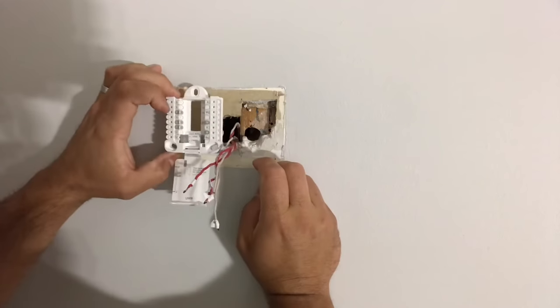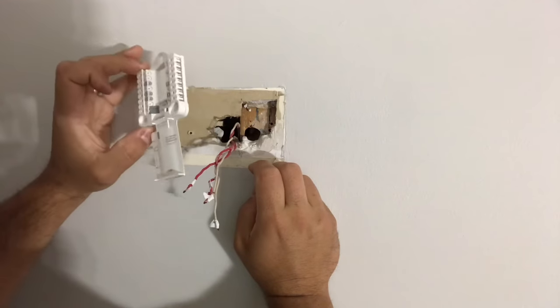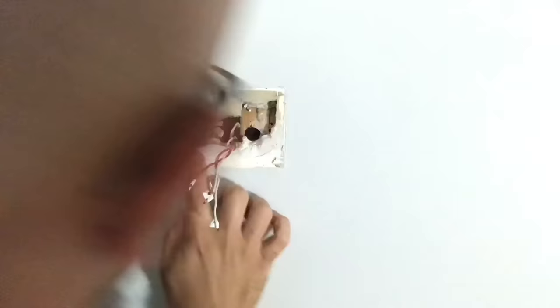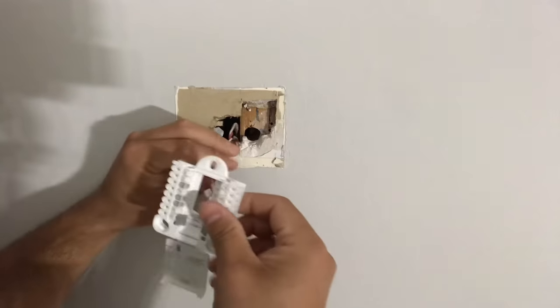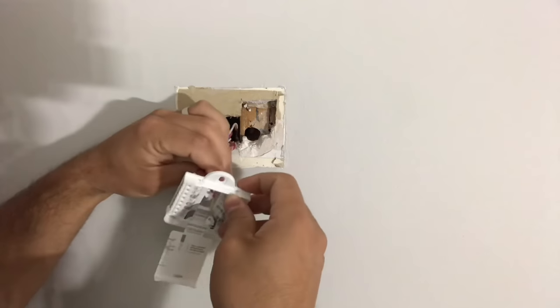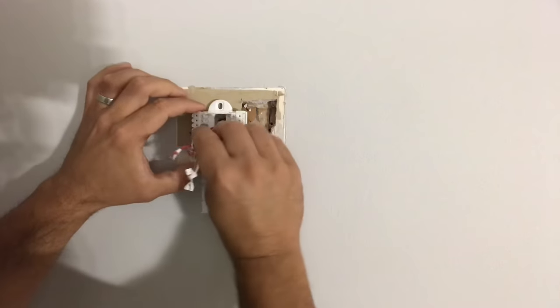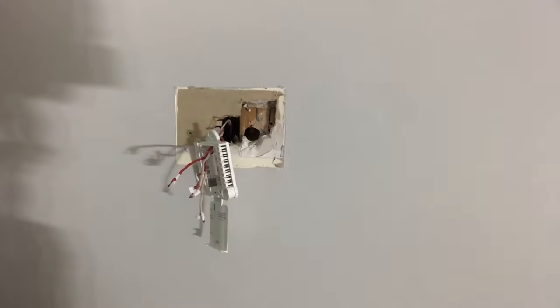So now that that's off, I took the new plate with the new circuit board of the digital thermostat and I just figured out where I wanted it to go. Also make sure that your wires do not fall into the wall. I pulled them out significantly, so I wouldn't lose them in the wall.